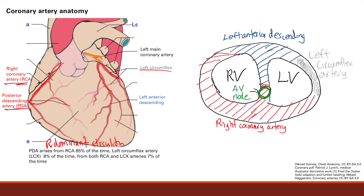That's 93% of the time. The remaining 7% of the time, the posterior descending artery can arise from both the left circumflex and the right coronary artery, and in that case it would be called a co-dominant circulation. So right dominant, left dominant, co-dominant — you want to remember those terms, you can get tested on it.